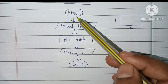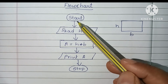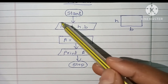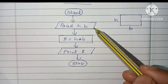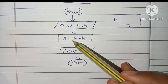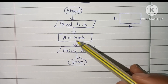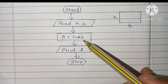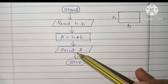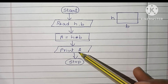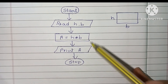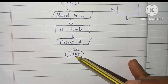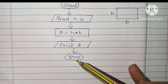The flowchart starts with the start statement written within an oval shape. Next we read H and B — input values are always written within a parallelogram shape. We then calculate A is equal to H into B. Finally, we print the area of the rectangle, represented as A, within a parallelogram shape, and stop the flowchart using the stop statement.